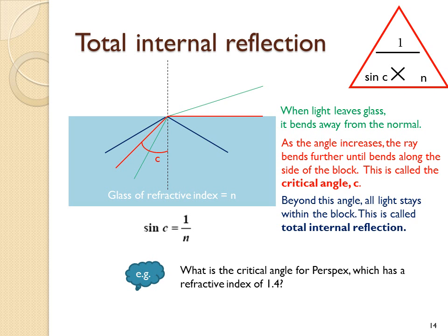To calculate the critical angle for perspex, if you know its refractive index is 1.4, you start by calculating sine of the critical angle, which is 1 over n. With that number, we then need to use the inverse sine function to calculate the critical angle, which comes out to be close to 45 or 46 degrees.